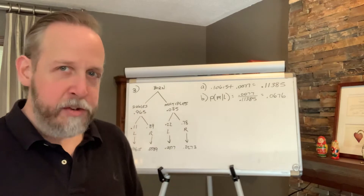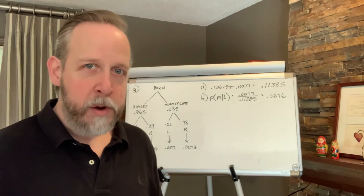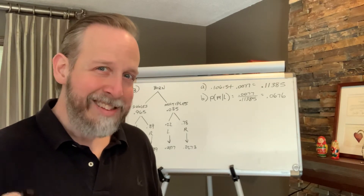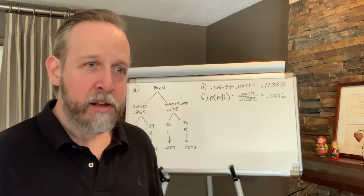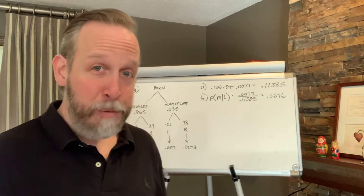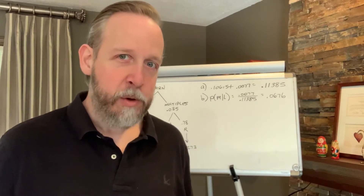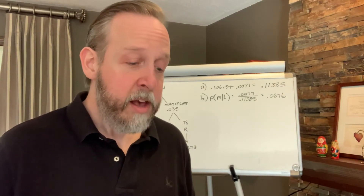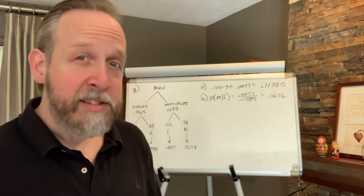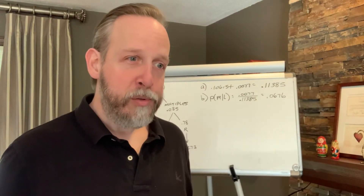Part C shifts gears. It says if I find 20 people at random from the population, what's the probability I find at least three who are left-handed? It has shifted immediately into being a binomial cumulative density problem. We have our fixed value n, which is 20. We know the probability of finding a lefty from Part A: 0.11385. We're looking for at least three successes, which is the right side of the binomial curve, which means we're going to use the complement rule.